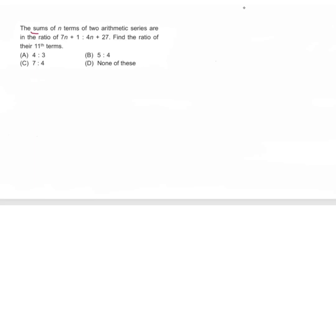The sum of the nth term of two series are in the ratio 7n plus 1 divided by 4n plus 27. We will find the sum of the arithmetic series. We will write this as equation 1.